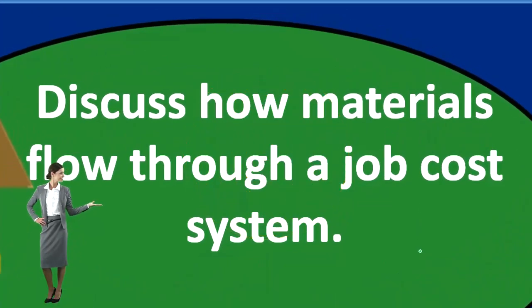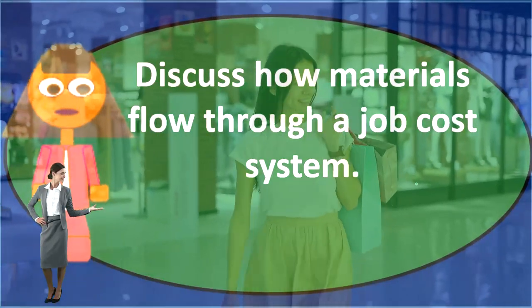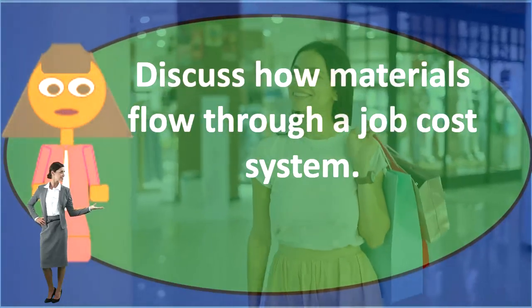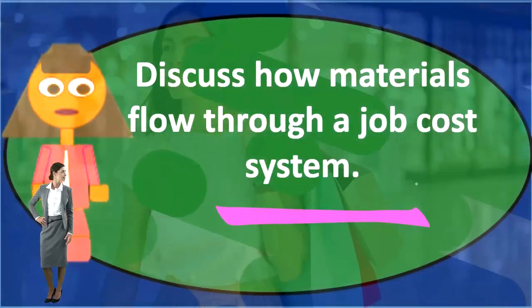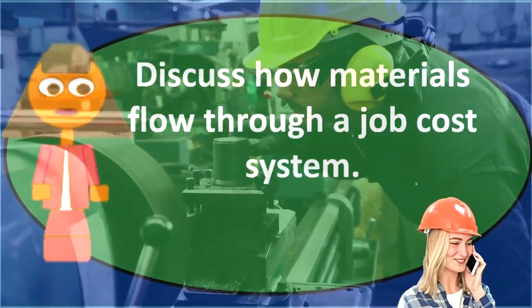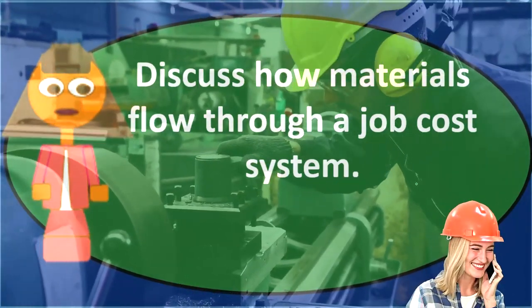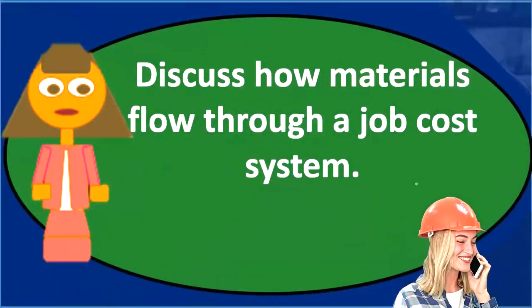To get a little bit more detailed, we would say first, we would purchase the materials, possibly putting it into our warehouse. So if we're making like guitars, we're going to purchase the wood for the guitars, put that into our warehouse. We're going to track the materials as we would in a similar way that we would have for inventory in a merchandising company. We're going to track the purchase of that and we're going to track the use of it.